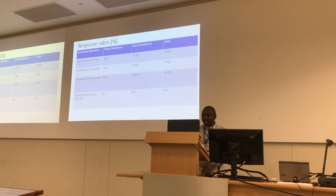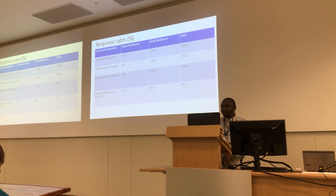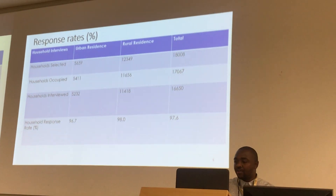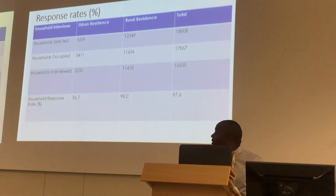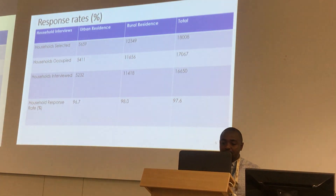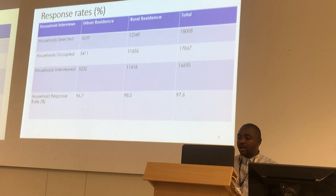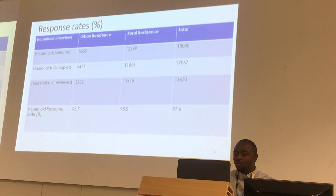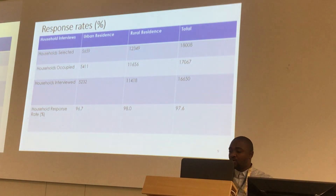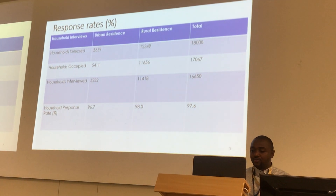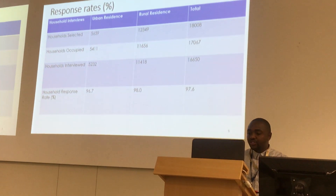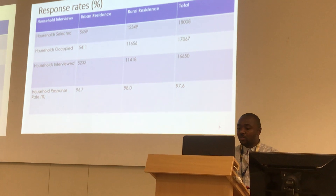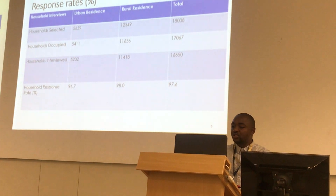In 2016, EDHS collected data on the nutritional status of children by measuring the weight and height of all children under the age of 5 in sampled households. A total of 10,752 children under 5 were eligible for height and weight measurement. Children's height, weight, and age data were used to calculate three indices: height for age, weight for age, and weight for height. Each index provides different information about growth and body composition for assessing nutritional status.